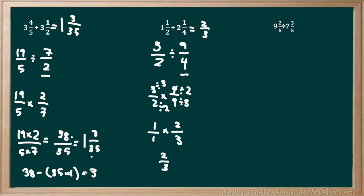Moving on to the final question: we have 9 and 2/5, all divided by 7 and 3/5. We convert each mixed number to an improper fraction. For 9 and 2/5: the denominator stays as 5, and the numerator is 5 times 9 plus 2. 5 times 9 is 45, and 45 plus 2 is 47, so we get 47/5. For 7 and 3/5: the denominator stays as 5, and the numerator is 5 times 7 plus 3. 5 times 7 is 35, and 35 plus 3 is 38, giving us 38/5.